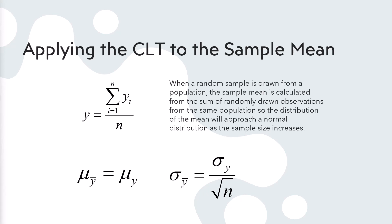Let's take it a step further and apply the central limit theorem to the sample mean. If you look at the formula for the sample mean, in the numerator you see a sum — a sum of y, where y represents an observation from 1 to n. Each observation is randomly selected from the same population, so we're summing random variables drawn from the same distribution. From the CLT, the statistic y-bar should in fact follow a normal distribution, assuming n is large enough.